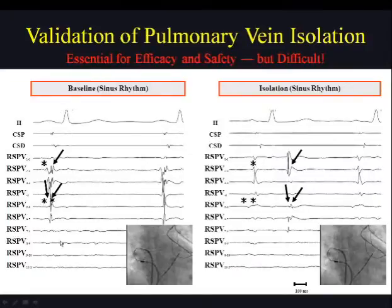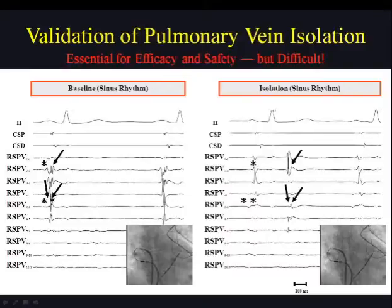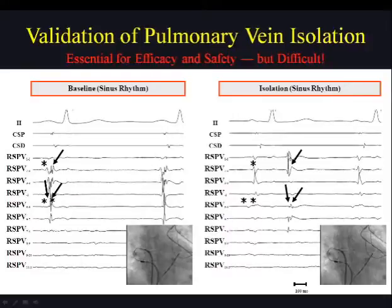On the left, you can see the potential before any ablation on the circular mapping catheter at the pulmonary vein ostium, showing an overlap of different potentials. On the right panel, I show the signals after obtaining a dissociated PV rhythm, confirming bidirectional isolation, which reveals that far field can be large amplitude and even double. On the other hand, the pulmonary vein sleeve potential is not always sharp and high amplitude — it can be tiny and fragmented. So a tiny potential can also be a PV potential.